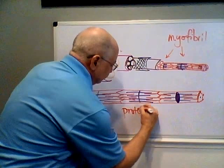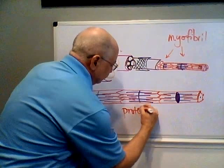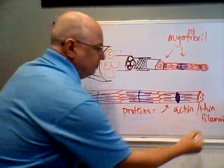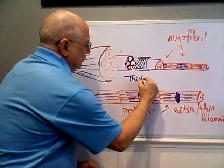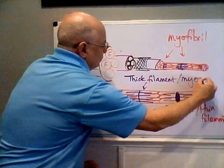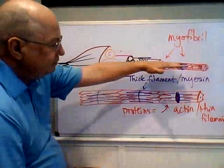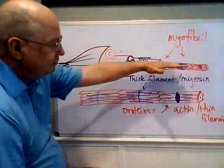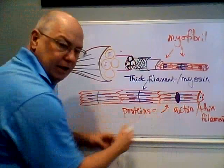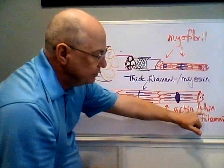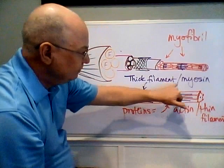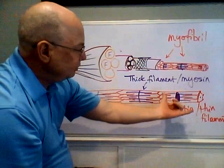The two proteins found in a myofibril are called actin — the thin filament — and myosin — the thick filament. Your book uses the terms myofilament and filament interchangeably; myo comes from the word muscle. So we have two myofilaments that make up myofibrils. There are other proteins involved — titin, connectin, and others — but we'll focus on actin and myosin. Technically, the thin filament is made up primarily of actin, and the thick filament is made up primarily of myosin, but those terms are used interchangeably.